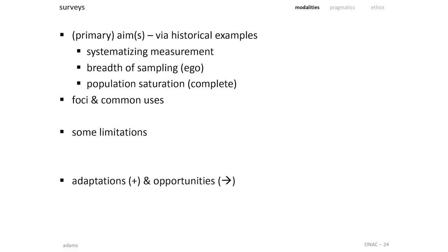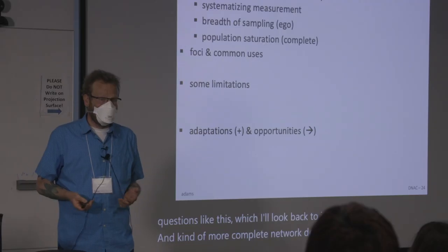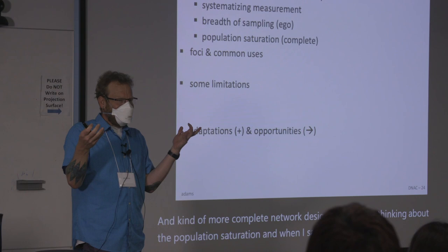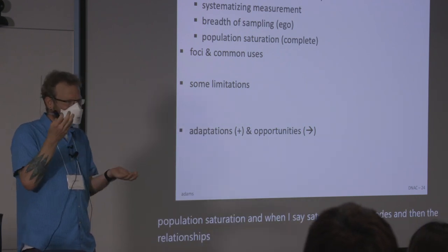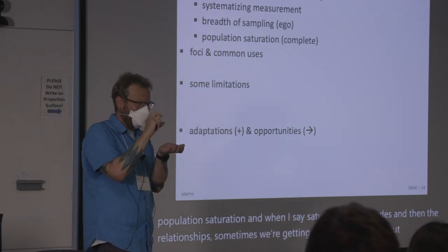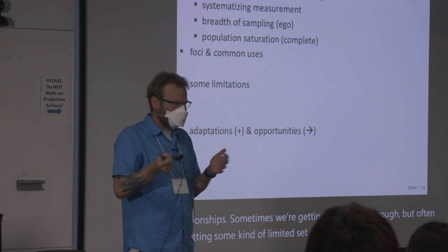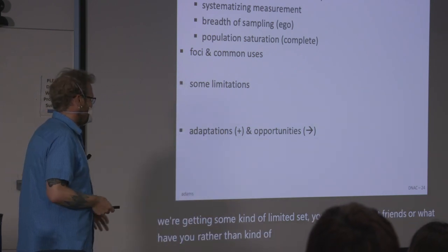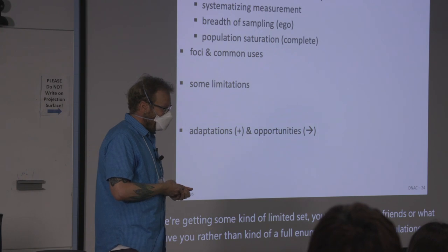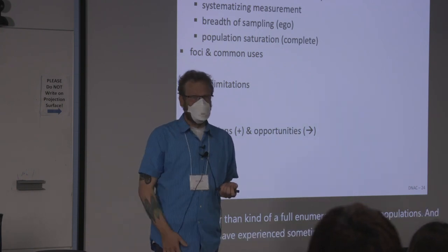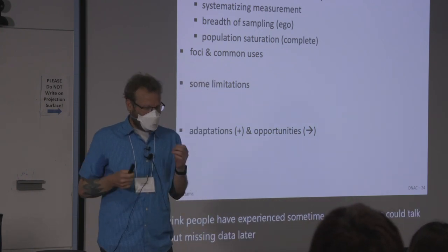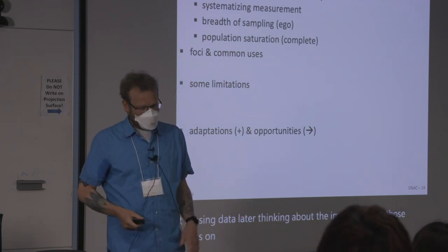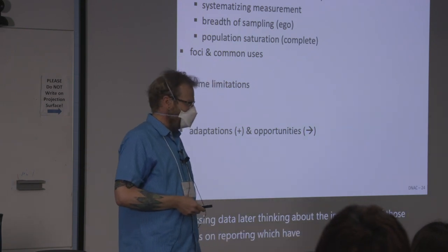In the more complete network design, we're often thinking about population saturation of the nodes and then the relationships. Sometimes we're getting saturation, but often we're getting some kind of limited set — five best friends or similar — rather than full enumerations. People have spent time recently thinking about the implications of those constraints on reporting, which I've also written and thought about.